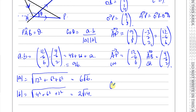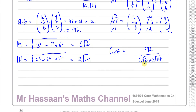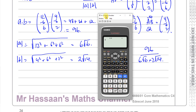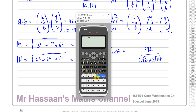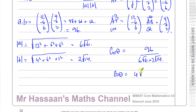So the cosine of the angle I need is 96 over (6√6 × 2√14). Simplifying: 96 over 12√84 gives us 4√21 over 21. So cosine of theta is 4√21/21, and that is the answer for part B.